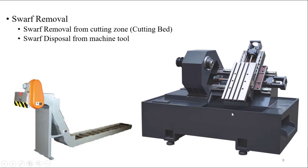This slanted bed method is for smaller machines. If the machine is bigger, you use a different kind of system. The waste material falls onto the surface, and then a motor takes it out and it falls into a collection point. It is collected from the base of the machine — that is called swarf disposal from the machine tool. So there are two types of swarf removal: from the cutting zone due to the slanted bed, and from the machine tool using a conveyor at the base.